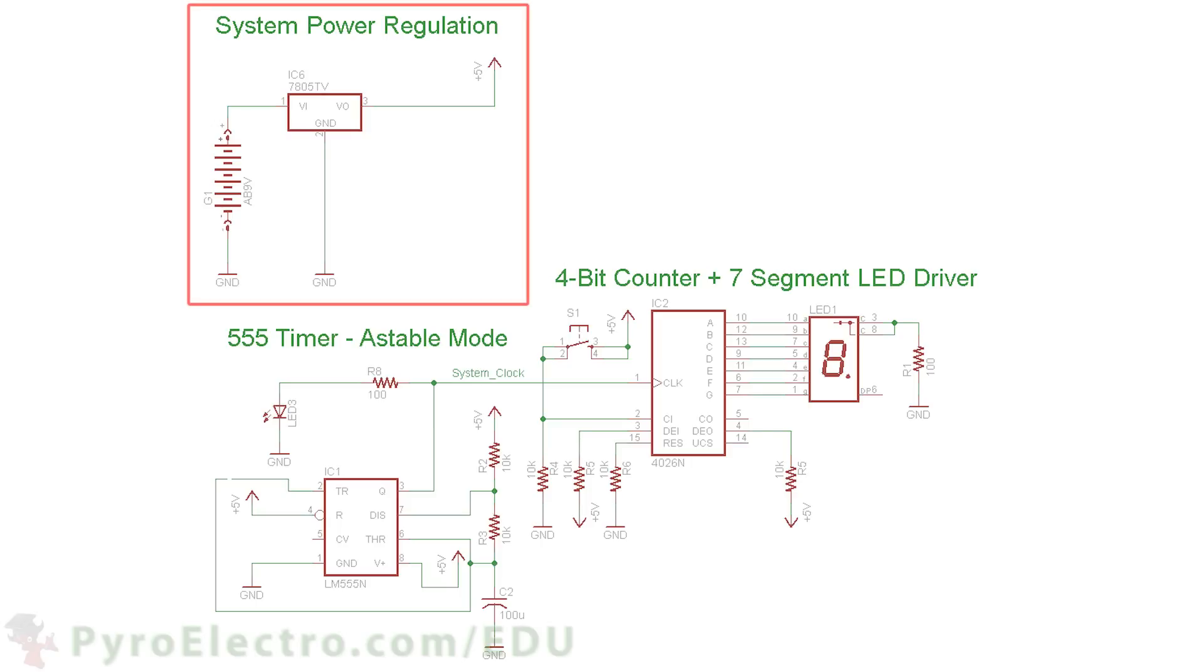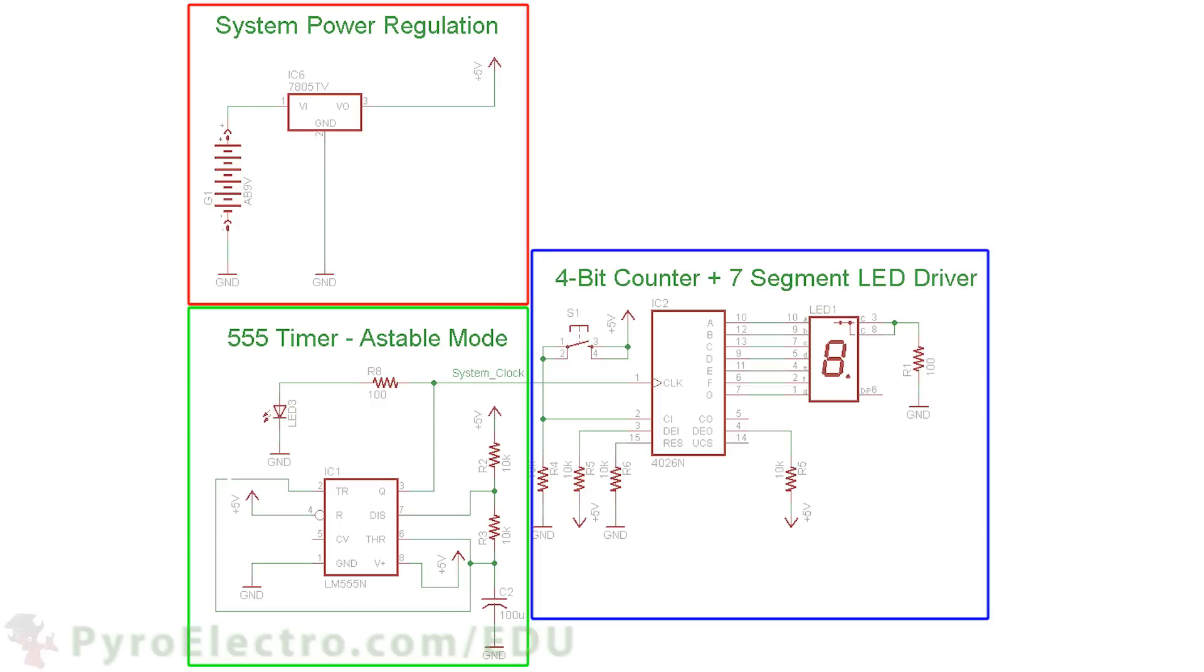We'll need a power regulator at 5 volts, a 555 timer at 0.5 hertz, the 4026 powered up and enabled, and the 7 segment LED connected to the 4026.